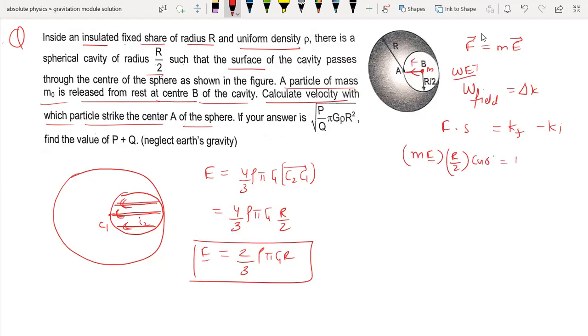This equals half m v square minus zero, which is m into 2 by 3 pi rho G r into r by 2. Therefore v equals square root of 2 by 3 pi rho G r square.